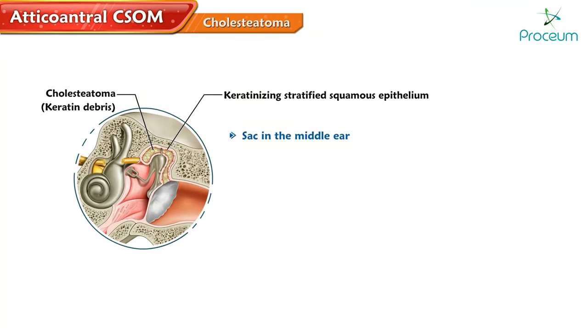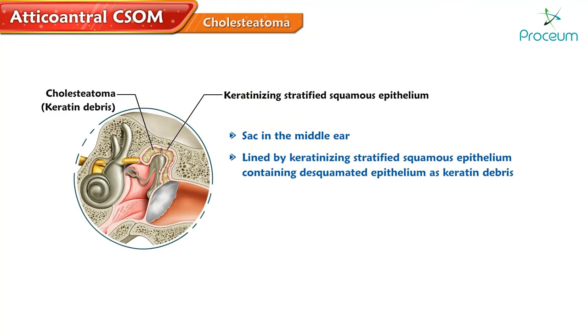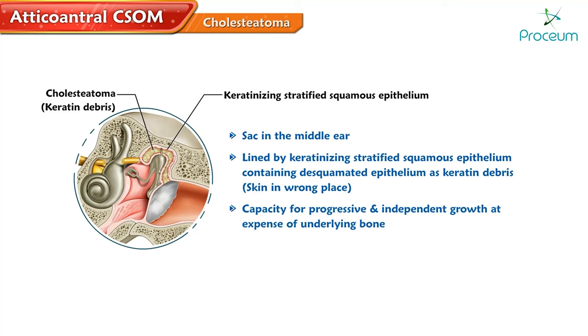Cholesteatoma is defined as a sac in the middle ear which is lined by keratinizing stratified squamous epithelium, containing desquamated epithelium as keratin debris. It is also described as skin in the wrong place. This structure has a capacity for progressive and independent growth at the expense of underlying bone and has bone erosion properties, with a tendency to recur unless removed completely.